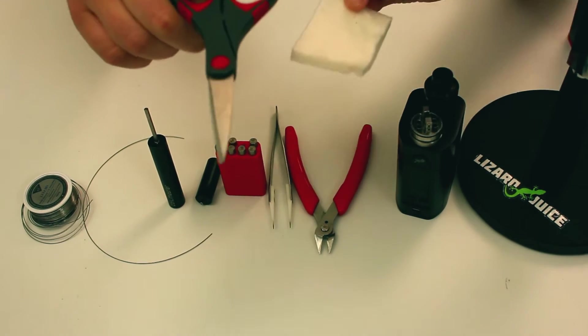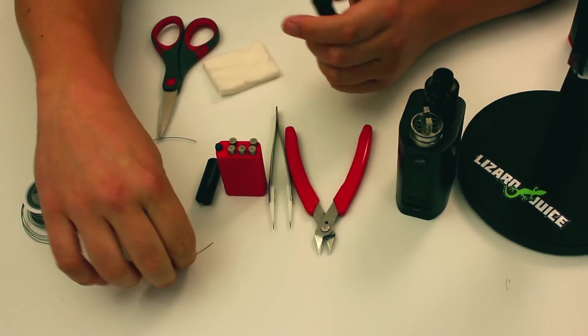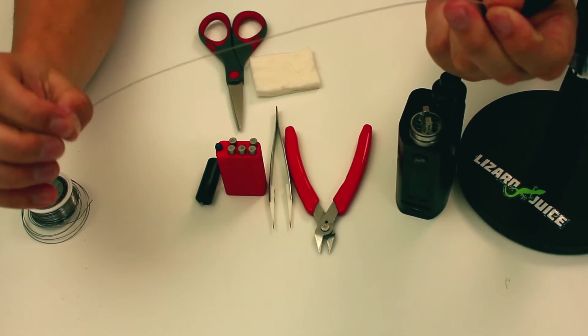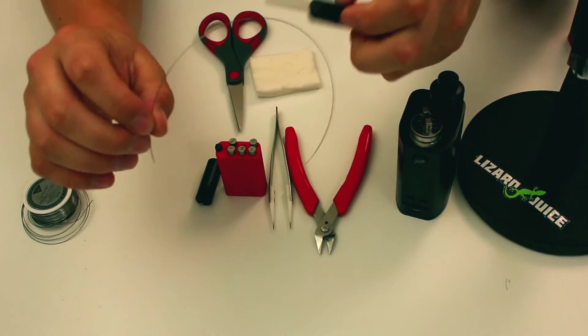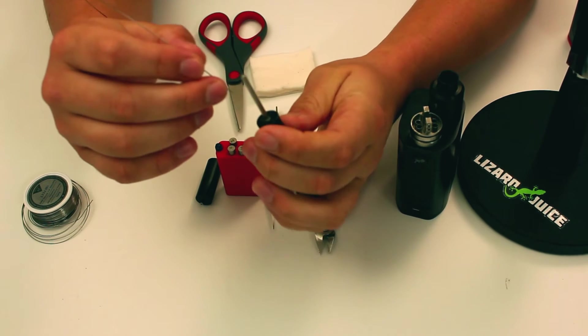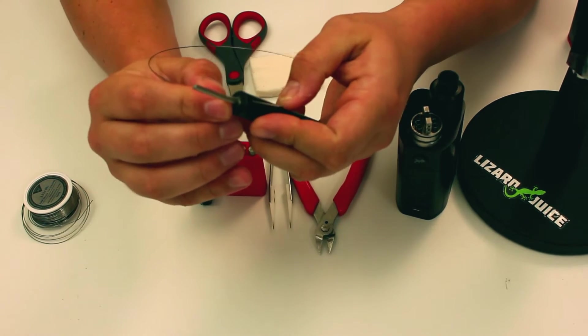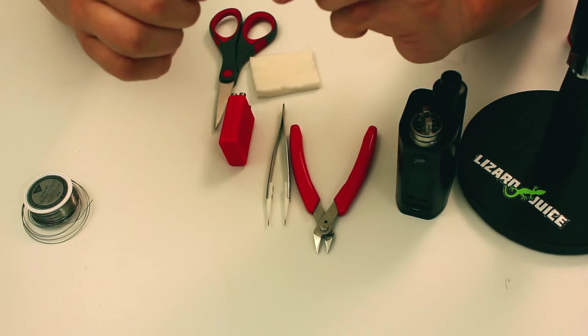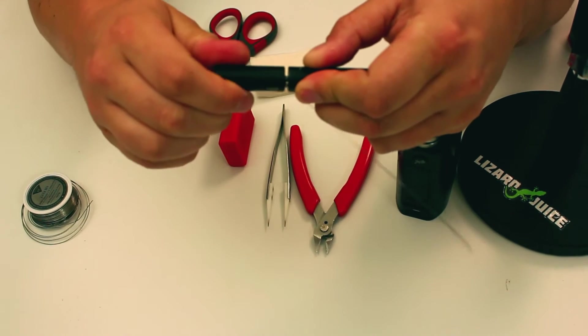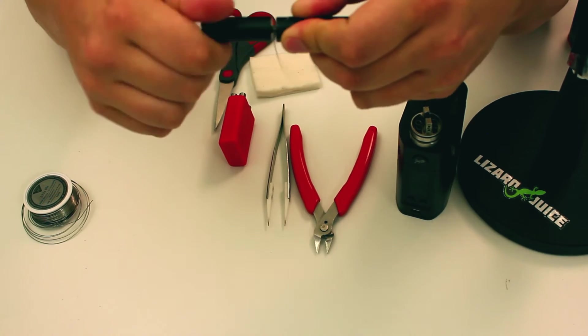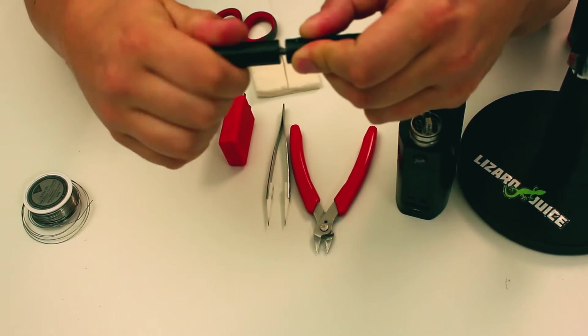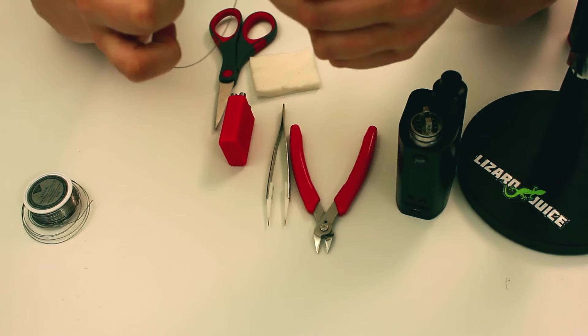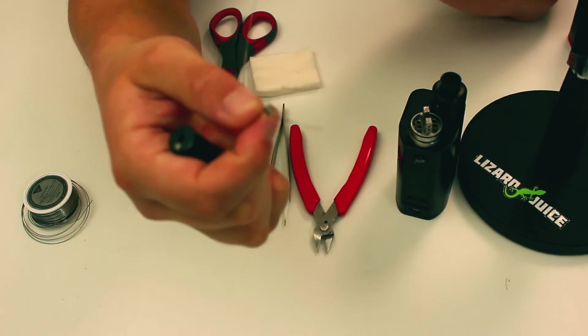Let's get into building here. Take your wire, cut about eight inches off of it. All I need is about eight inches to make two decent coils. Take your coil jig—with the Coil Master tools it makes it really easy because you just put your wire through the jig, pinch that wire, take the coiling tool, and simply just wrap around the tool. Like I said, makes it extremely easy. There's your first coil.